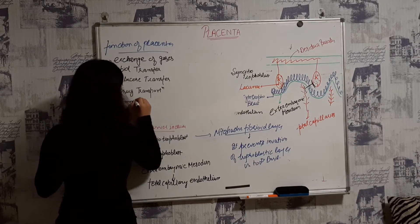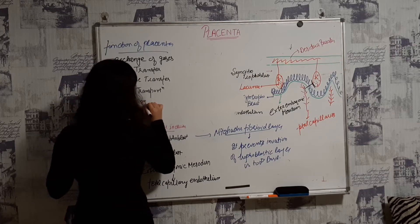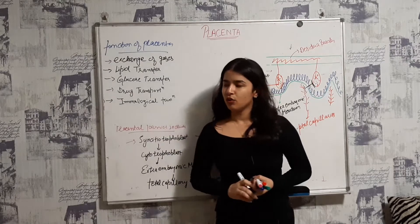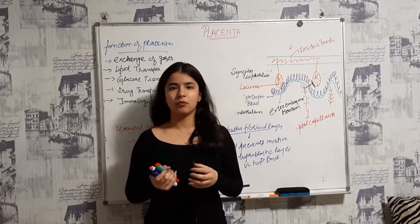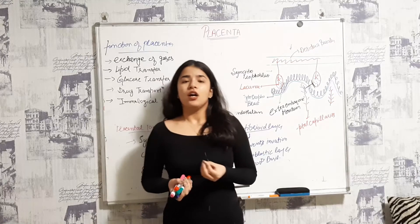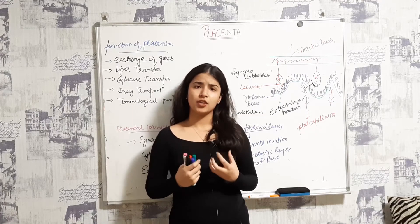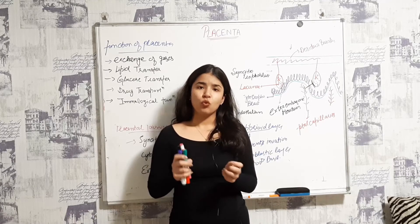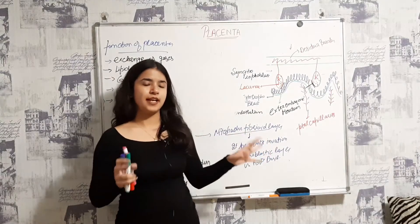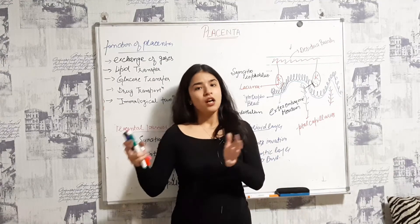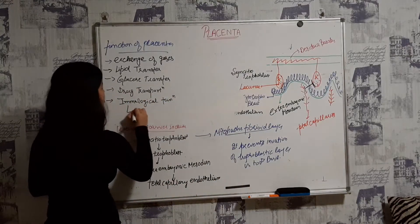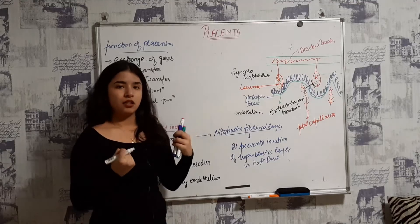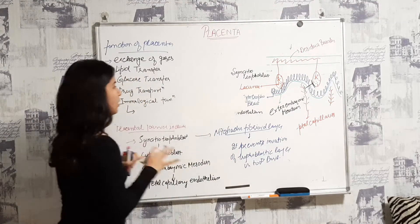The placenta also has an immunological function. The fetus is essentially a foreign body for the mother's immune system — so why doesn't the body reject it? The answer is that there is no HLA antigen on the syncytiotrophoblast, so the mother's body cannot recognize the fetus as a foreign antigen, and the fetus survives.